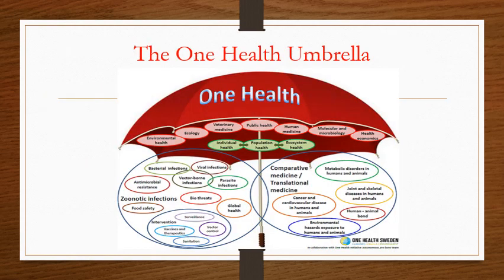Finally, this is the One Health Umbrella, showing everything under one umbrella — including Environmental Health, Ecology, Veterinary Medicine, Public Health, Human Medicine, Modern Molecular Biology and Health Economics. It shows that individual health is connected to ecosystem health, and different aspects of other professions are also linked together. Thank you for watching.